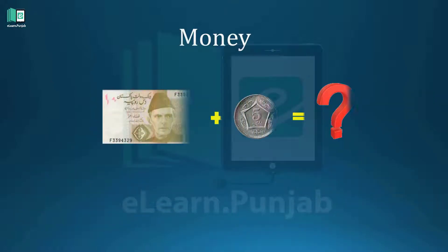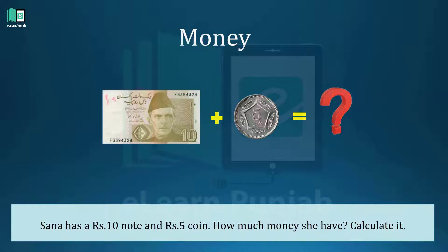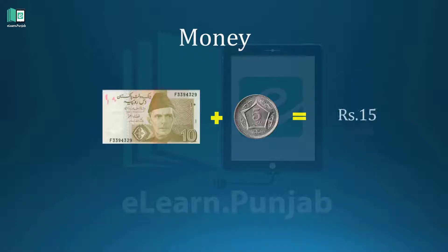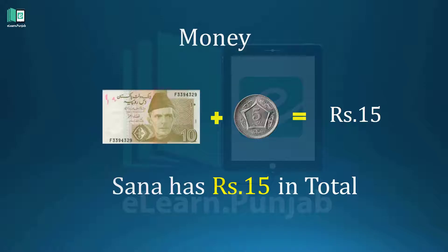Sana has a rupees ten note and a rupees five coin. How much money does she have? Calculate it and write down in your notebooks. Do you know ten plus five equals how many rupees? After calculation, the answer is rupees fifteen. Sana has rupees fifteen in total.